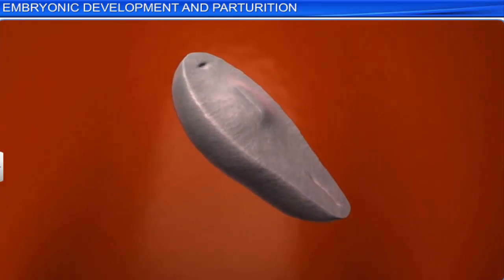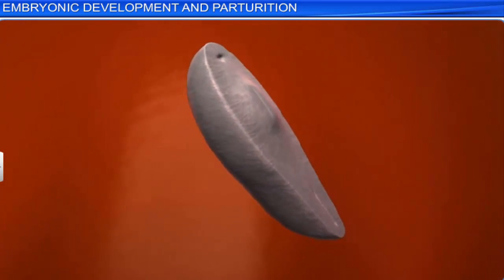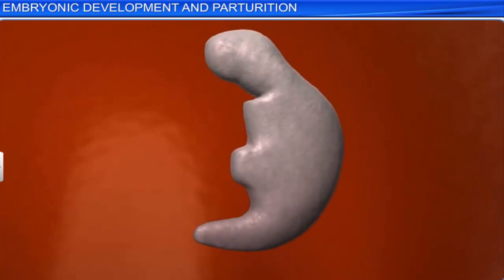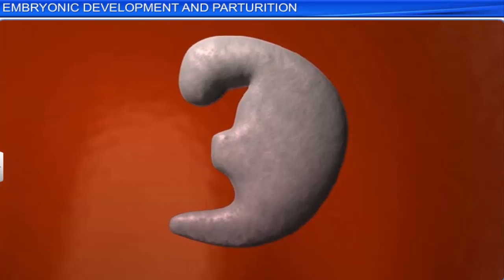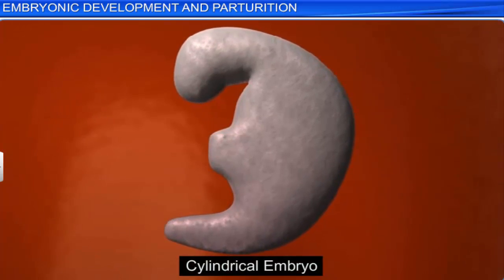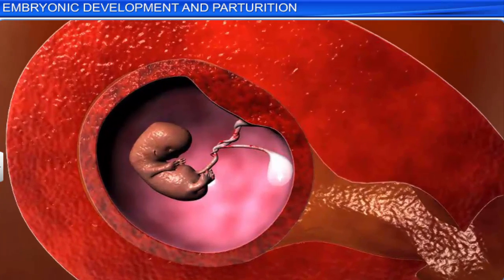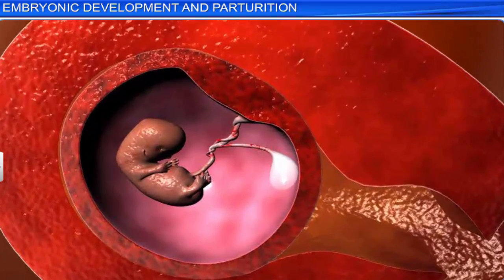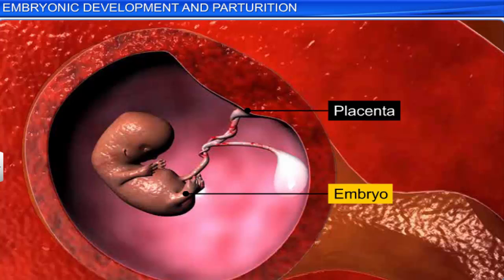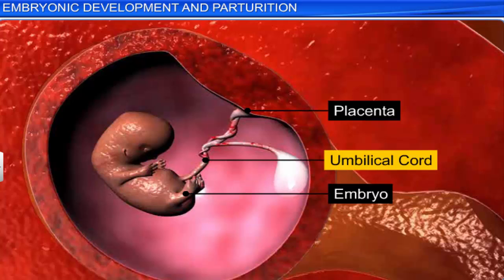As the embryonic disc grows, the cells of one side of the disc grow faster than those on the other side. This causes the disc to roll and form a cylindrical embryo. Initially, this embryo is attached to the placenta, but as it starts to develop, it moves away from the placenta and remains connected to it via an umbilical cord.